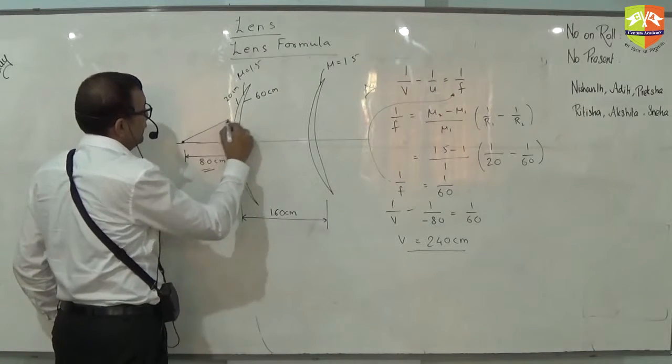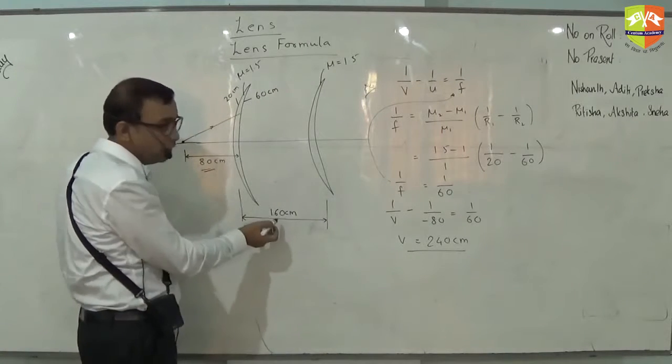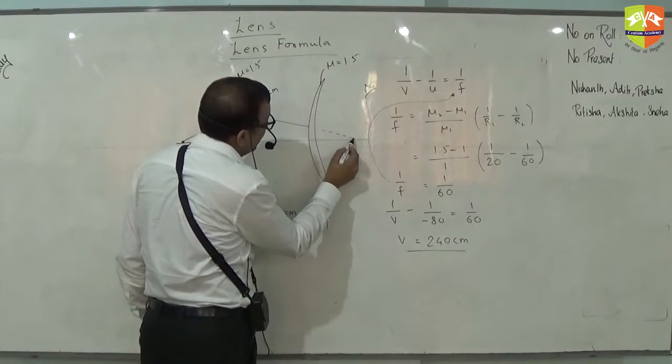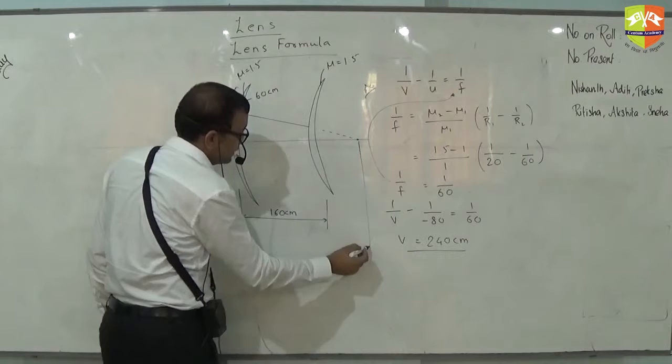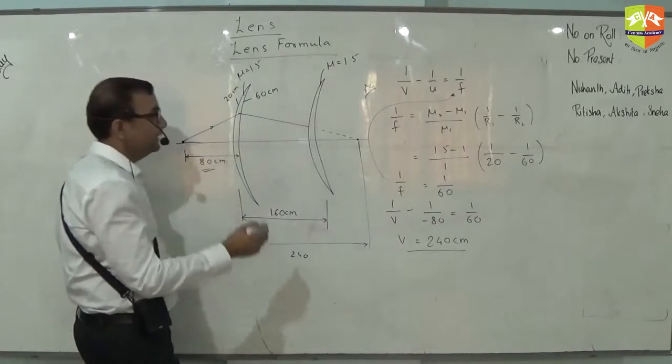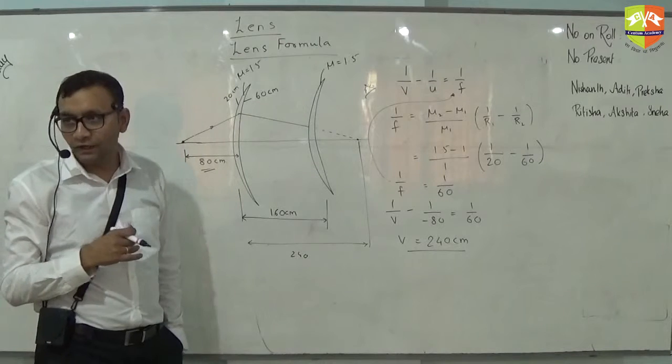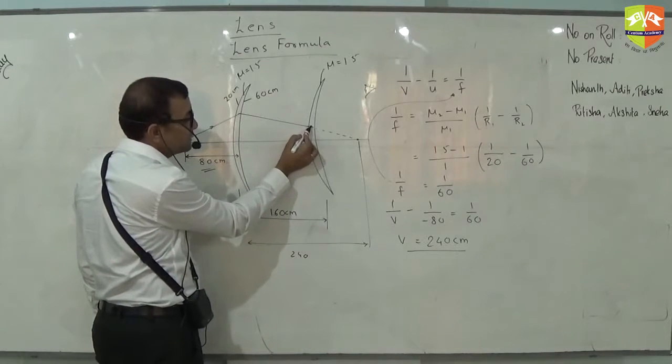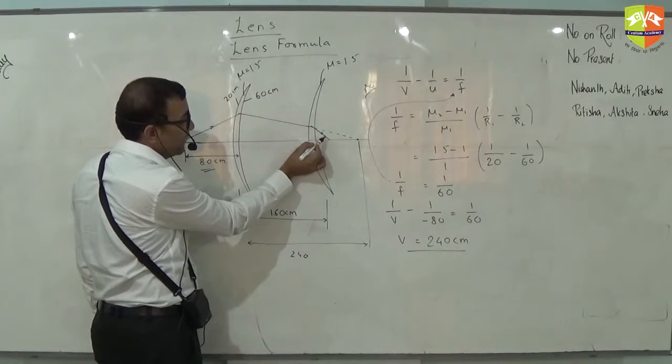From here, the image of that will be 240 cm. So it will try to form an image somewhere over here, whose distance is 240. But it is not able to do that. So what will happen? Light will further converge because this converging lens will converge like this. So finally, maybe it will be here somewhere.